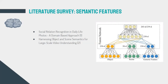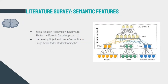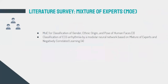The second part of our literature survey is concerned with the idea of mixture of experts. The first paper utilized a mixture of experts approach for gender, ethnicity, and facial pose classification, implementing many different decision trees and SVMs each trained on a different subset of the data, with their outputs fed to a judge model that optimizes the final classification. Another paper we surveyed classified ECG arrhythmia using a network based on a mixture of experts and negatively correlated learning.